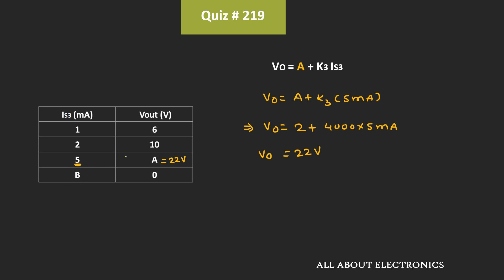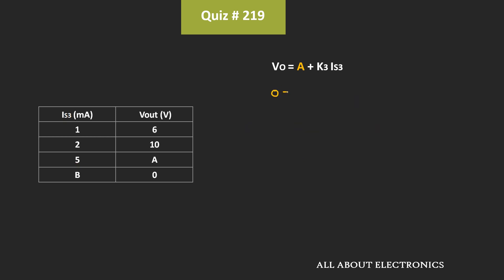Similarly, let's find the value of B when the output voltage Vout = 0. Here Vout = 0, A = 2, and K3 = 4000. We need to find IS3, which equals B. So: 0 = 2 + 4000·B, giving B = -2/4000 = -0.5mA. That means whenever the output voltage is 0, IS3 = -0.5mA.